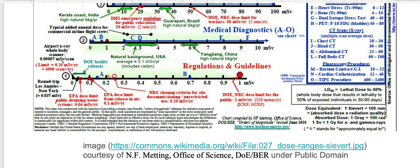The EPA sets limits on how much radiation a human body can take. For example, the EPA dose limit for public drinking water is 0.04 millisieverts per year. Airport x-ray whole body scanners give 0.00007 millisieverts per scan, so a human body can only take about 4,000 scans per year before reaching the EPA limit of 0.25 millisieverts per year.